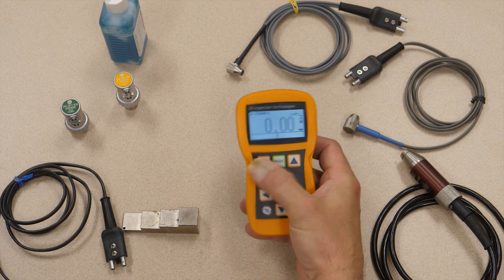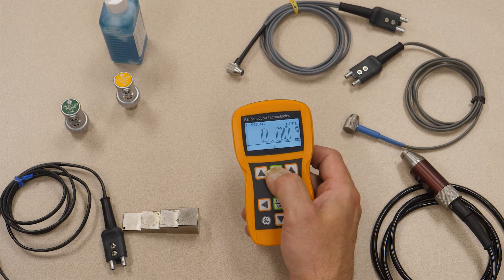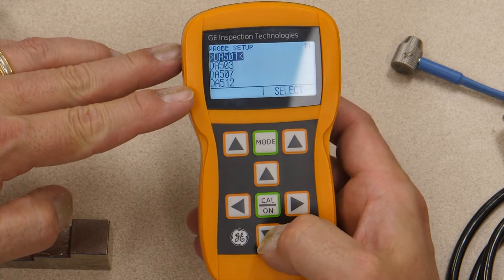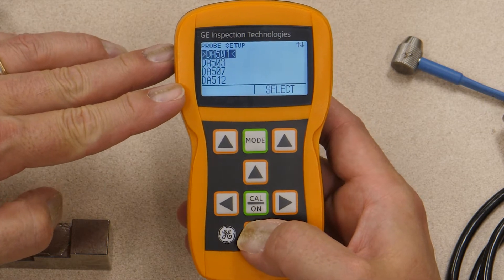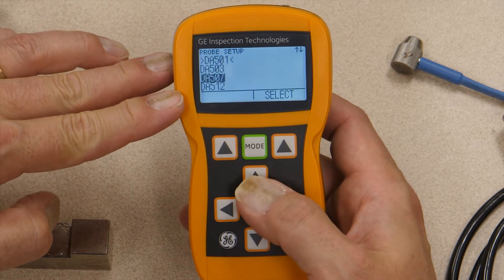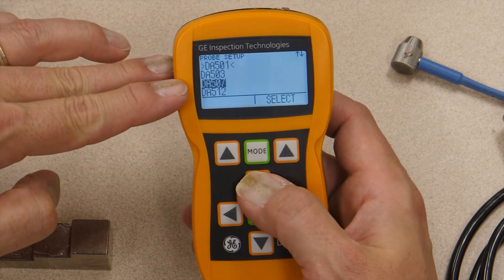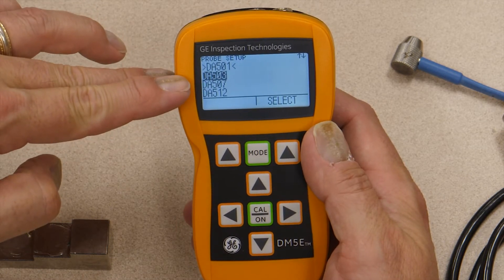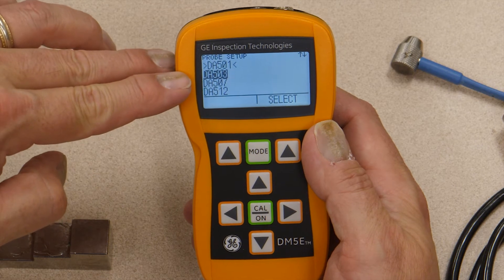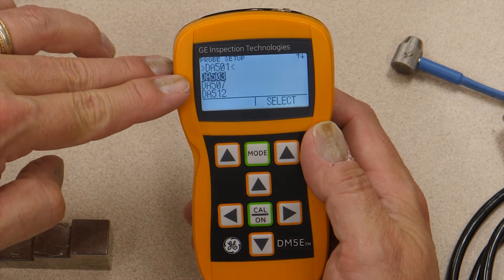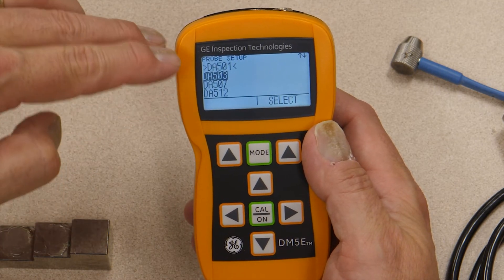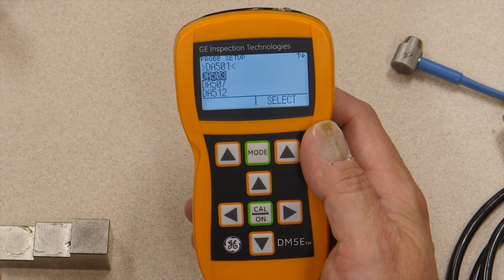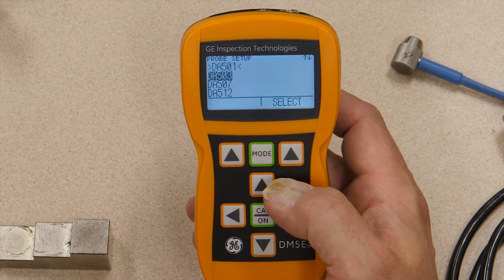To do that, you have the instrument running, press the mode button, and it brings up the list of supported probes. You can scroll up and down. You notice there's a black cursor. As I use the up and down keys, I can move through the list and the black cursor follows. The black cursor is not telling me which probe is currently selected though. The selection of the probe is indicated by the greater than, less than brackets on either side of the selected probe.